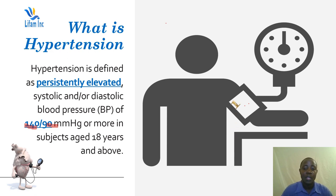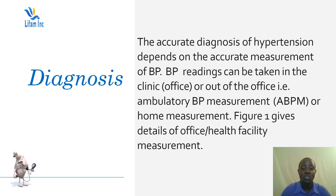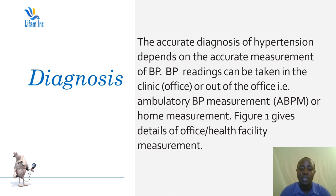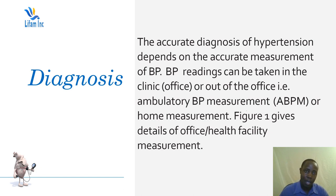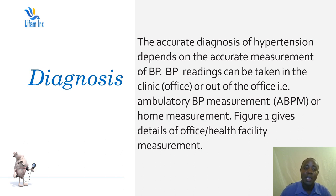Diagnosis of hypertension is done through accurate measurements of blood pressure. Readings can be taken in a clinic when the patient visits, at home, or during movement — what we call ambulatory blood pressure measurements. Blood pressure measurements should be taken over at least three days to calculate an average, as one measurement alone does not qualify a patient as hypertensive.